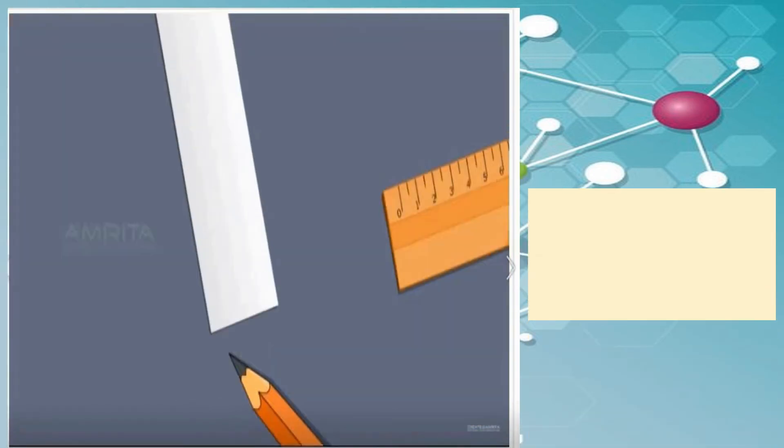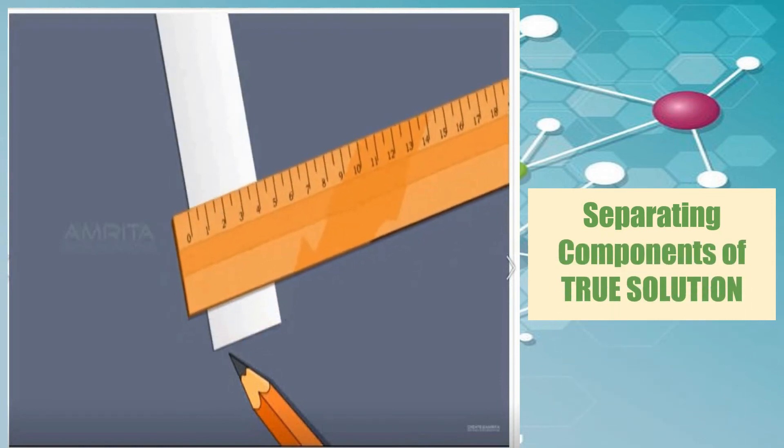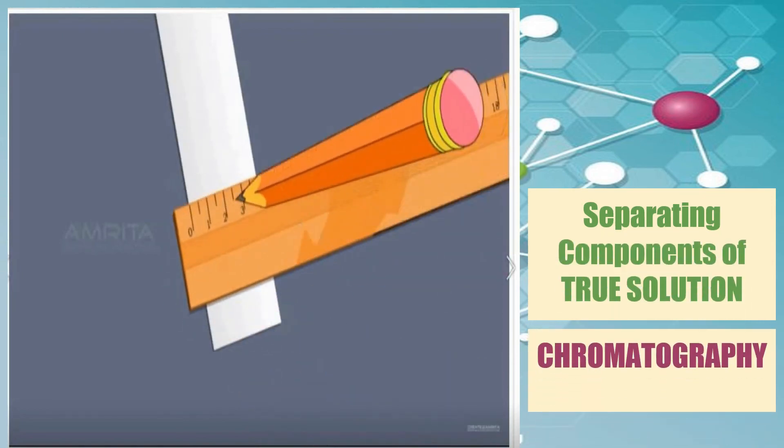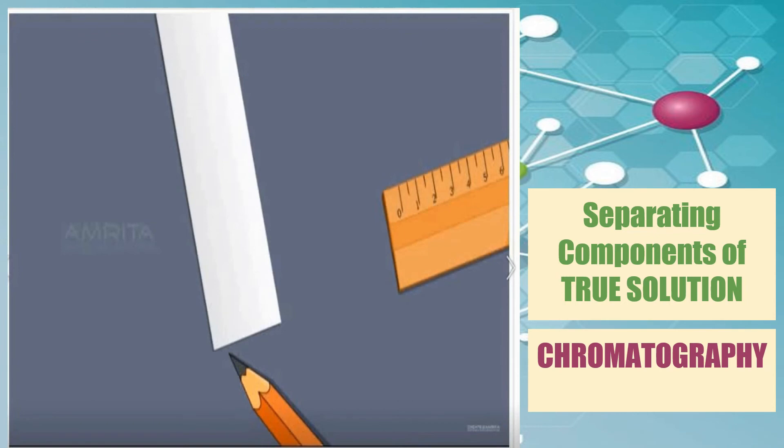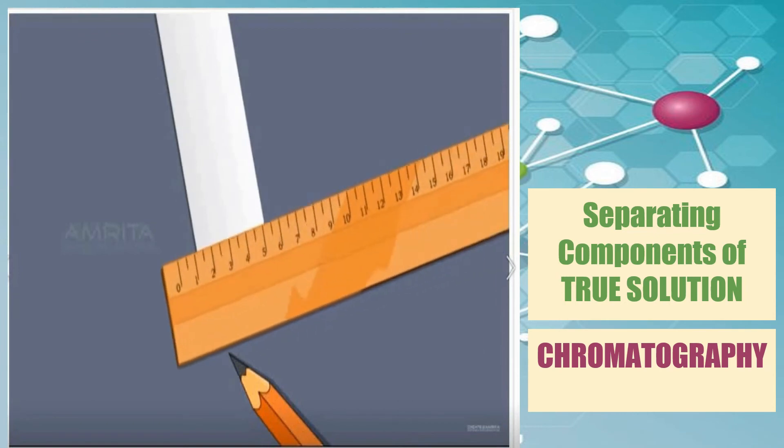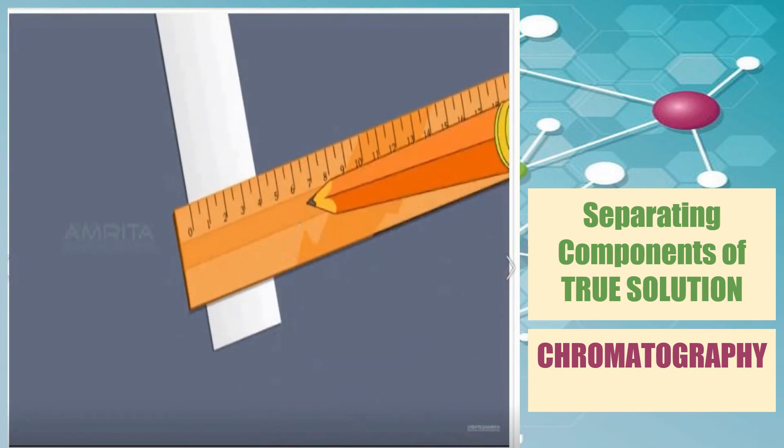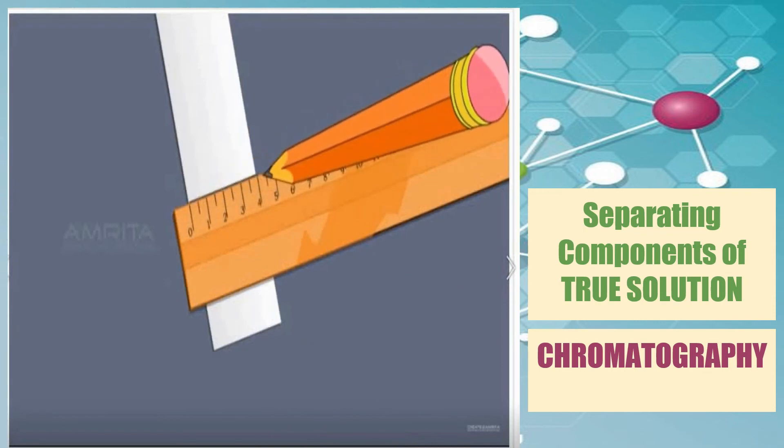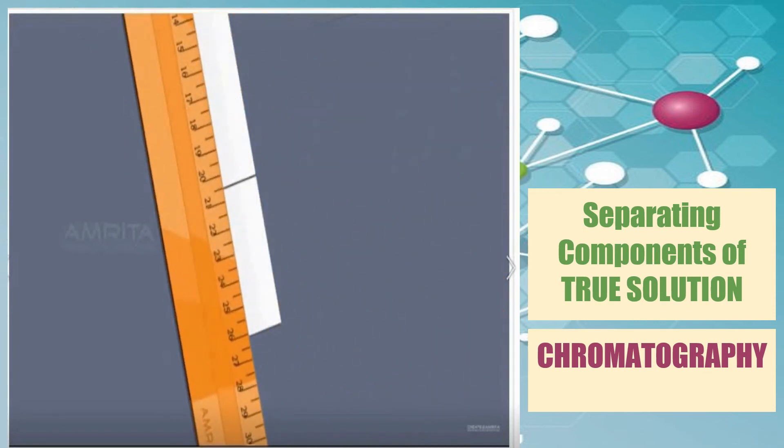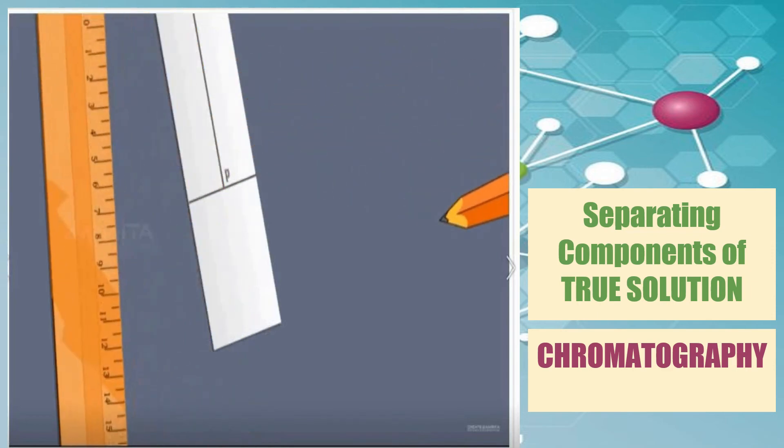Another separating technique used to separate the components of liquid mixture is by paper chromatography. Paper chromatography is one of the important chromatographic methods. Paper chromatography uses paper as the stationary phase and a liquid solvent as the mobile phase. Let us watch how it is done.